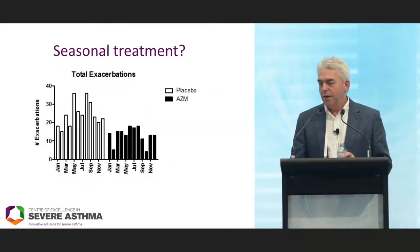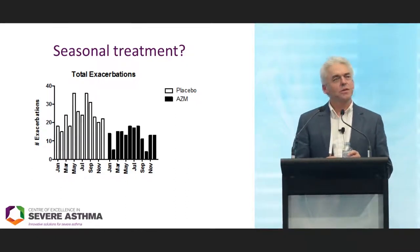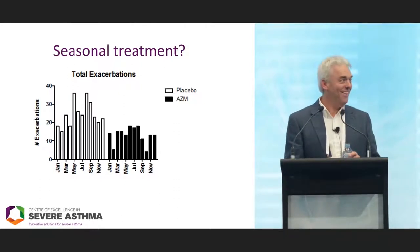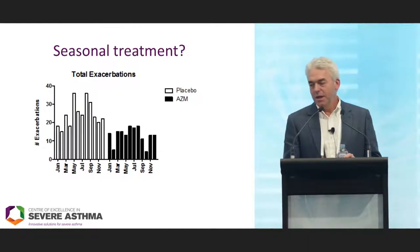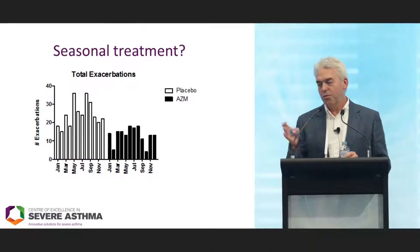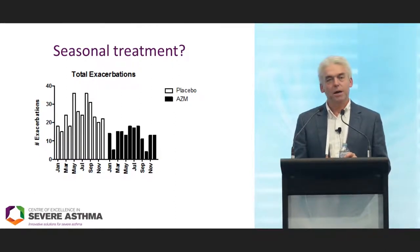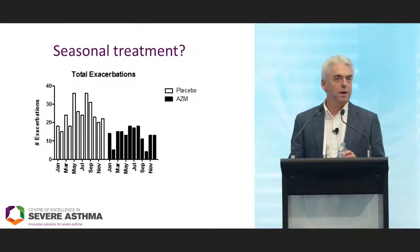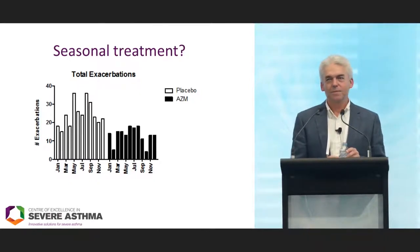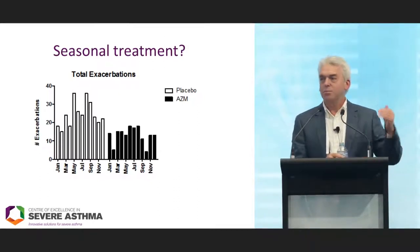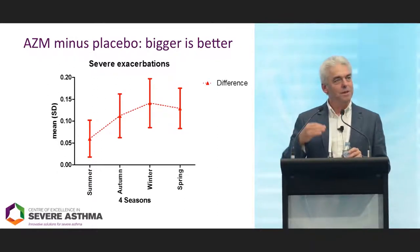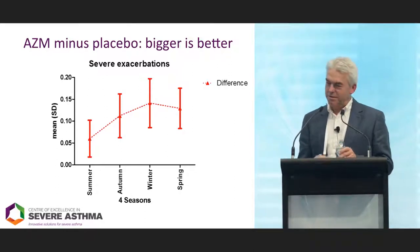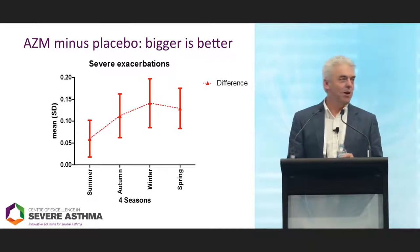What about seasonal treatment — could you just use it in winter? This is apparently popular in the UK. Here we have the AMAZES data by month of year — exacerbations in the placebo group (open bars) and azithromycin group (closed bars). Looking at the difference by season, the bigger the number the better the effect. I don't think the winter hypothesis holds up here, because in spring there appears to be an equally large effect.